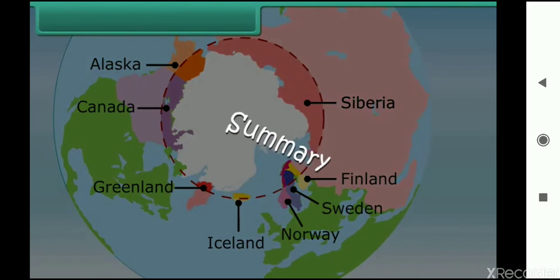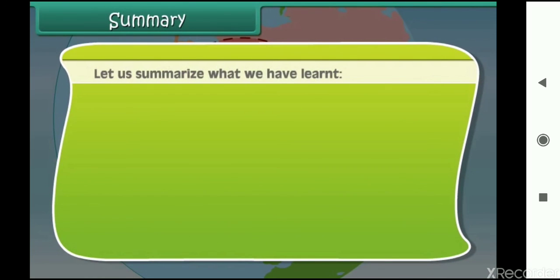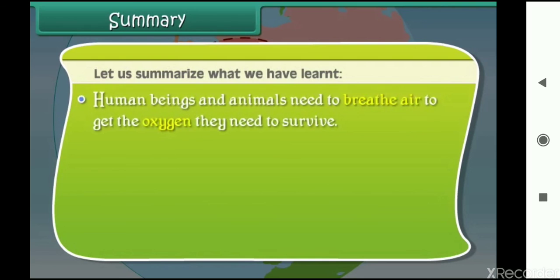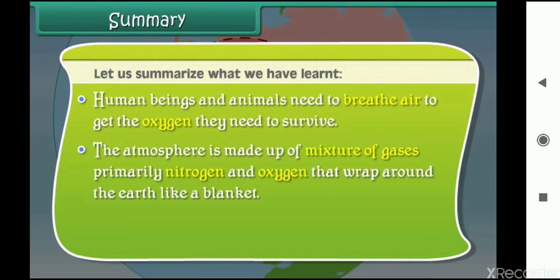Summary: Let us summarize what we have learned. Human beings and animals need to breathe air to get the oxygen they need to survive. The atmosphere is made up of a mixture of gases, primarily nitrogen and oxygen, that wrap around the earth like a blanket.